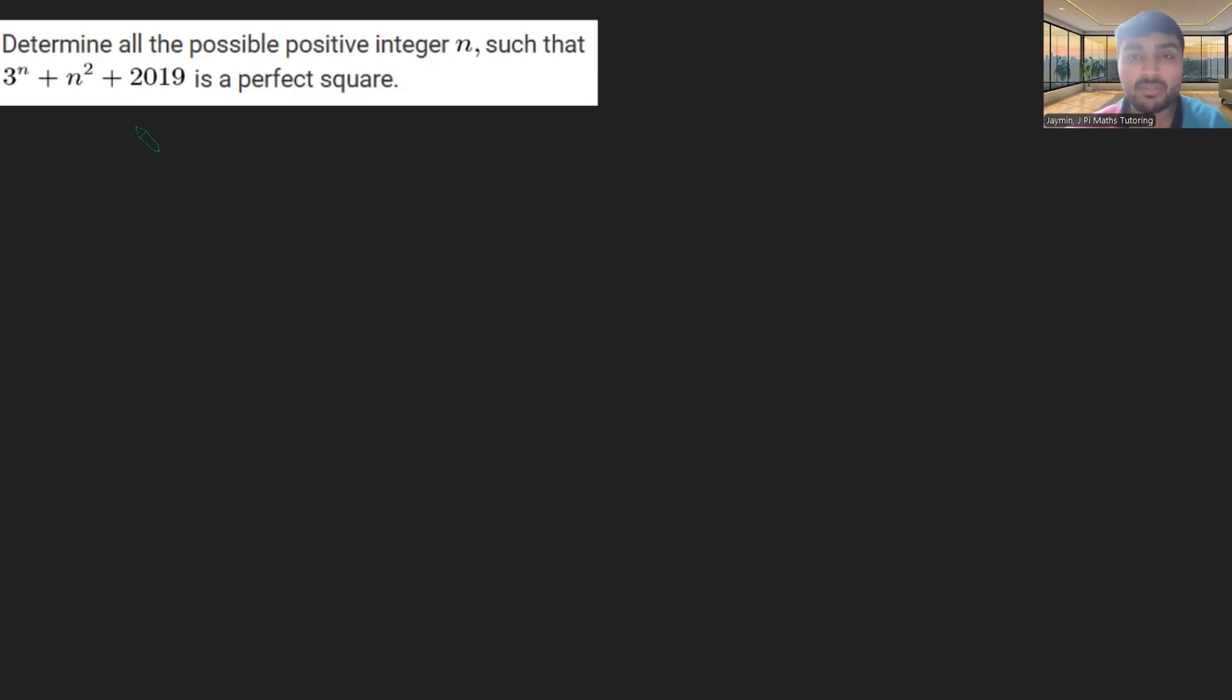Let me firstly investigate. That's normally my best advice for these sorts of problems. Just try some small values of n. So we've got 3 to the n plus n squared plus 2019. This is clearly going to be bigger than 2019. You can probably also guess which year this problem's from. 2025 is very famously a square number. It is 45 squared, so we could have some early contenders here.